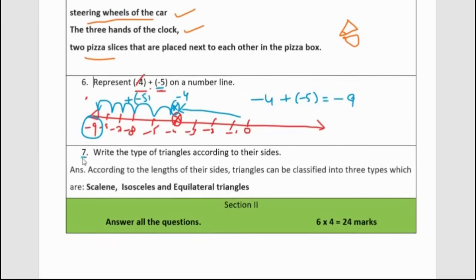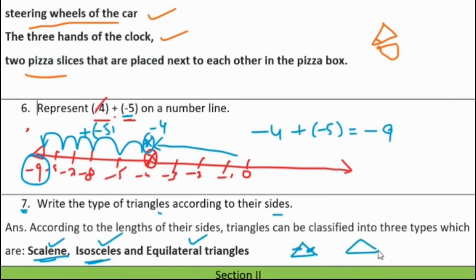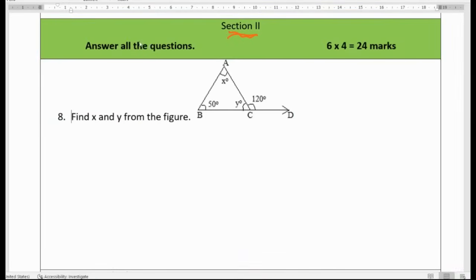Last question in this section — Question 7: Write the types of triangles according to their sides. According to sides, a triangle is divided into three types: scalene triangle (all sides unequal), isosceles triangle (two sides equal), and equilateral triangle (all three sides equal).